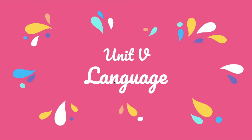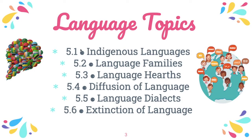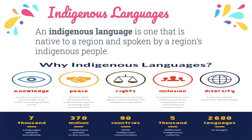Unit 5: Language. We're going to study six different sections throughout the language unit, and we're just going to look at the first two today. Section 5.1 is indigenous languages, and 5.2 is language families. An indigenous language is one that is native to a particular region and is spoken by people who are indigenous to that same region. Indigenous languages in today's world are oftentimes endangered, and many indigenous languages have gone extinct. That's unfortunate, and there's a huge movement to keep that from happening.